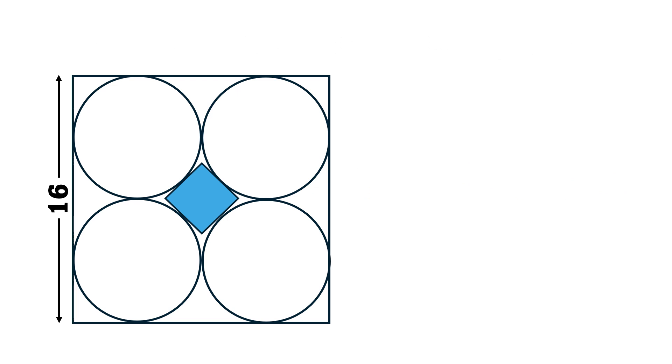First of all, we mark the centers of each circle and let's call the radius as R. Since the side length of larger square is 16, the length of this radius is 4 units.